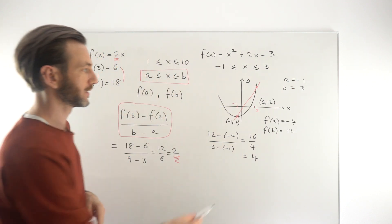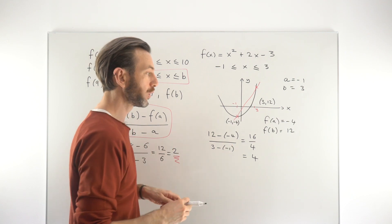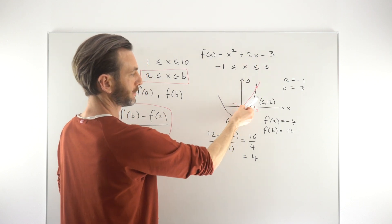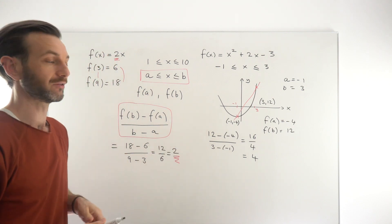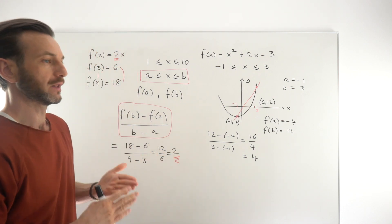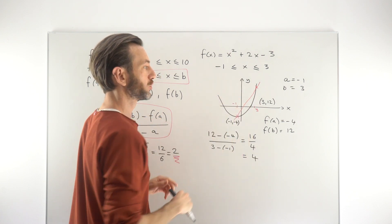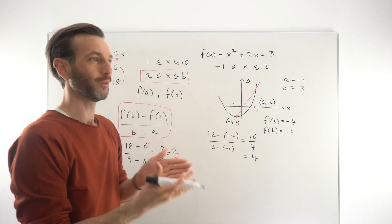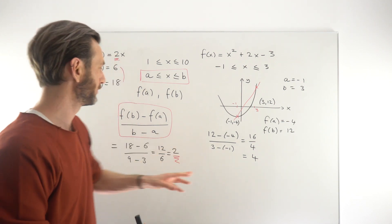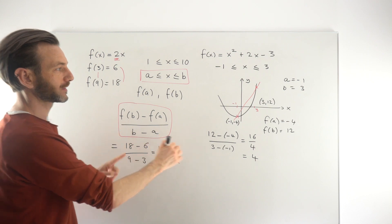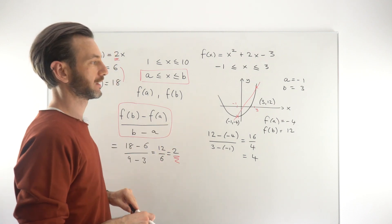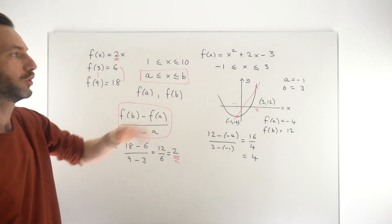That tallies up well with the graph, because we're saying the red line — drawn between those two points on the curve — should have a gradient of 4, and it looks about right. A straight line going up to the right with a gradient steeper than 45 degrees is more than 1, so that looks really good. What we're effectively doing is taking two points on the curve, drawing a line between them, and working out the gradient of that line.